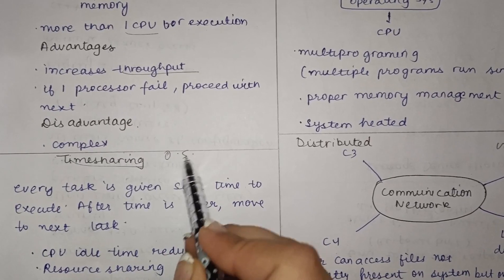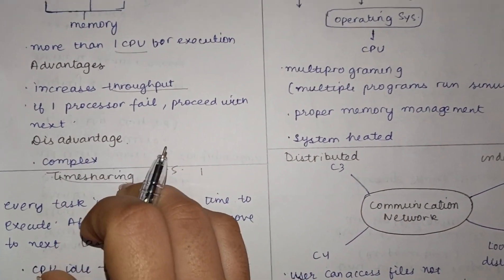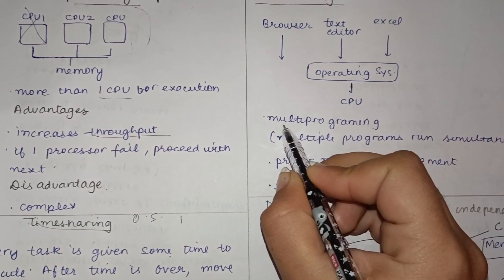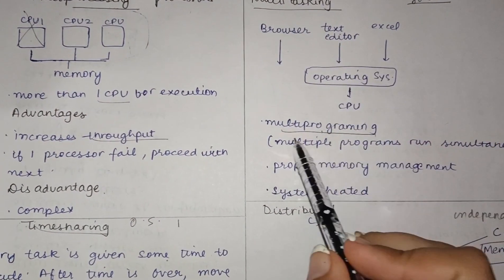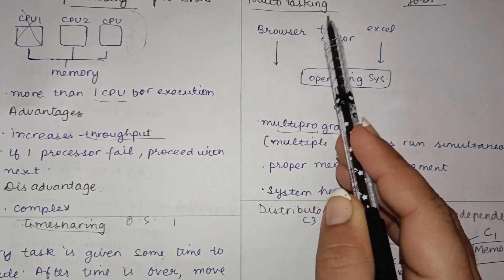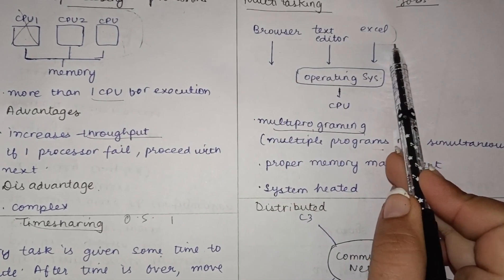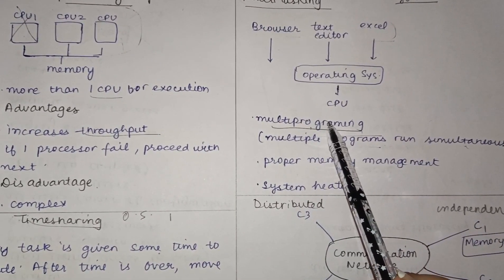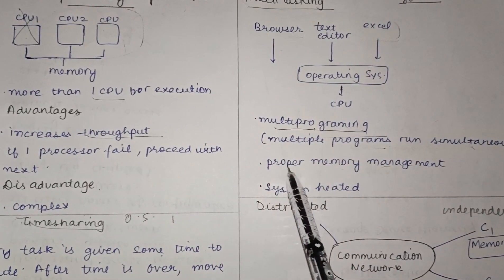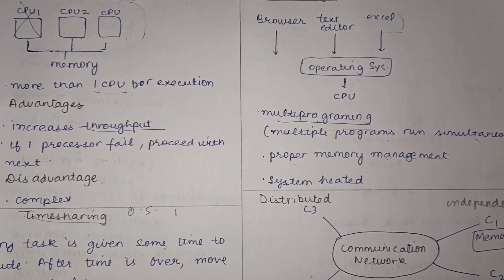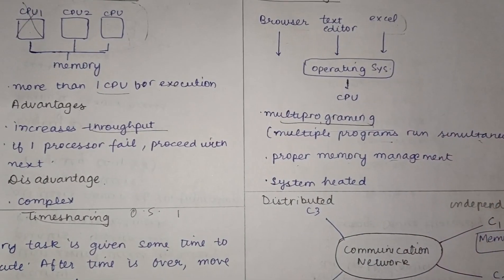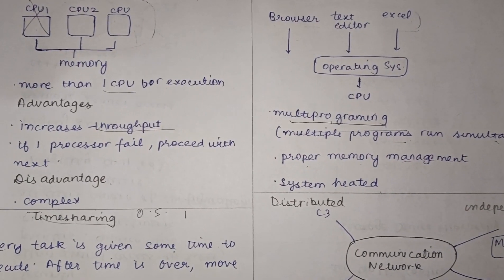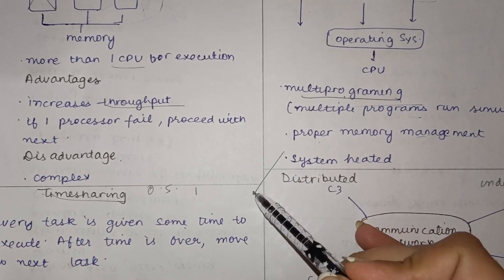Time sharing OS is related to multitasking. Multitasking means running many programs simultaneously — for example, a browser, a text editor, and an Excel sheet all running at the same time using multi-programming. Memory management is very precise in multitasking because memory is divided among various tasks such as the browser, text editor, and Excel. The disadvantage is that the system may overheat because so many programs are running simultaneously.